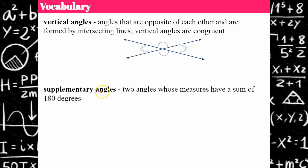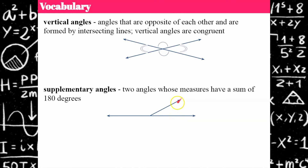Supplementary angles are two angles whose measures have a sum of 180 degrees, and this will be important to remember today. 180 degrees forms a line, so from here to here is 180 degrees. We have a ray on our line forming a smaller angle and a larger angle, and together the sum of these two angles is 180 degrees.